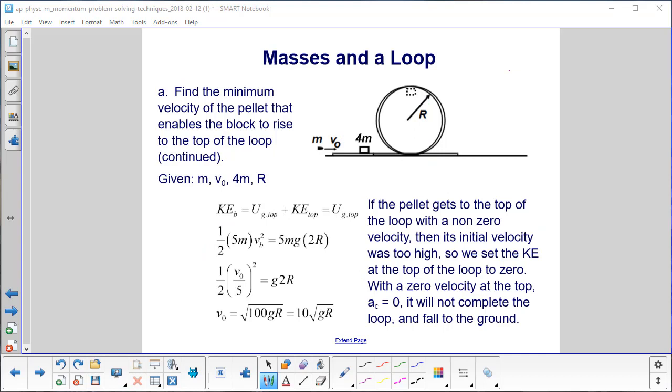We want the minimum velocity of the pellet so that the block pellet system just gets to the top and then crumbles down. If we get there with a non-zero velocity, which means it wouldn't fall down right at the top, then the initial velocity v0 we found is too high. We want it just to get up to the top and not continue around.